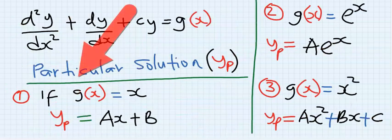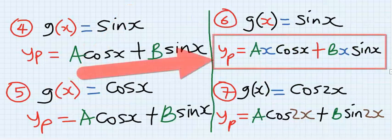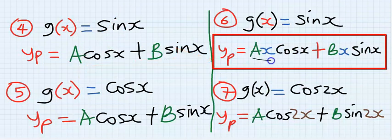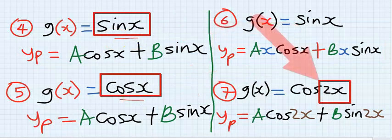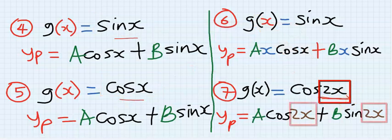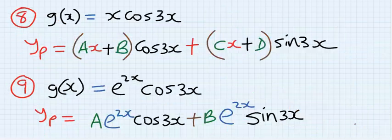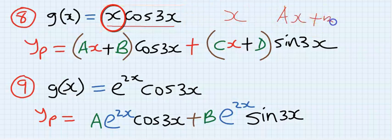If the complementary solution yc is already having constants a and b, then we are going to have ax and bx in the particular solution. Similarly, if sin or cos is multiplied by something like 2x, 5x, or 3x, always remember to include it. If x is multiplying a trigonometric function, remember that just for x, that particular solution is going to be ax plus b.